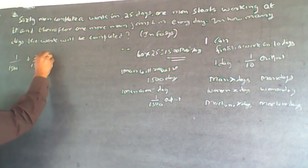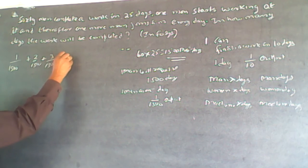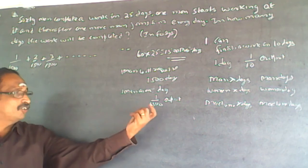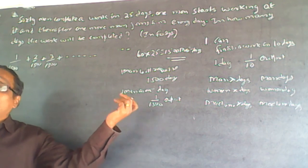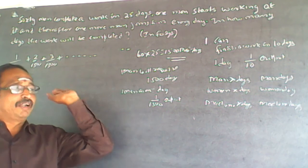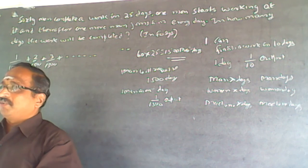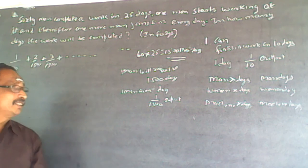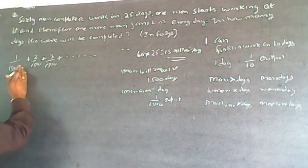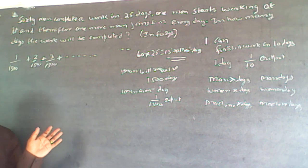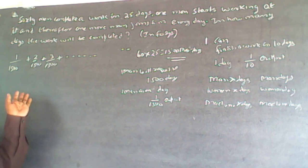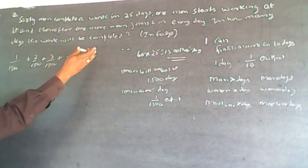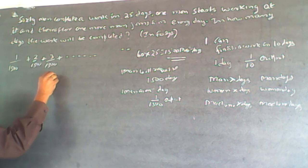Then 3/1500, and so on. The denominator of 1500 is not going to change, so you will have to do the summation of the numerators. The total work done equals the sum 1 + 2 + 3 + ... + n, all divided by 1500, and this must equal 1.